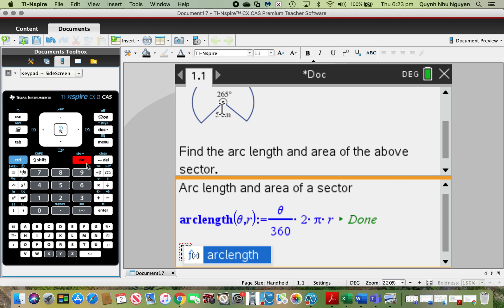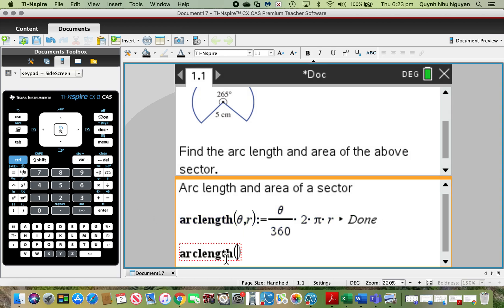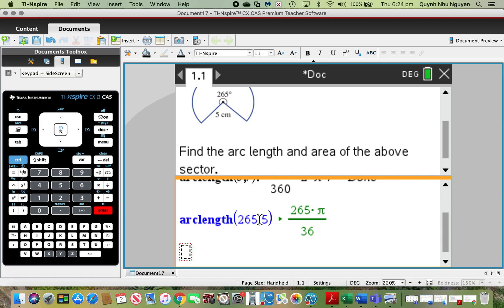I'm going to press the variable button and I already have arclength there. I'll type what theta equals, which is 265, comma, and what radius equals, which is 5, then press enter. The calculator will calculate the arc length of the above sector for me, just this curved length only, as 265π/36.